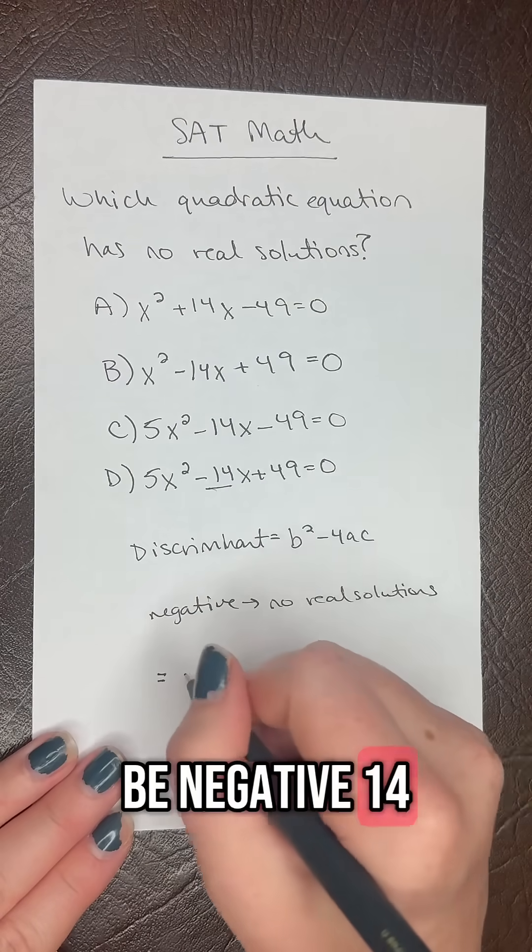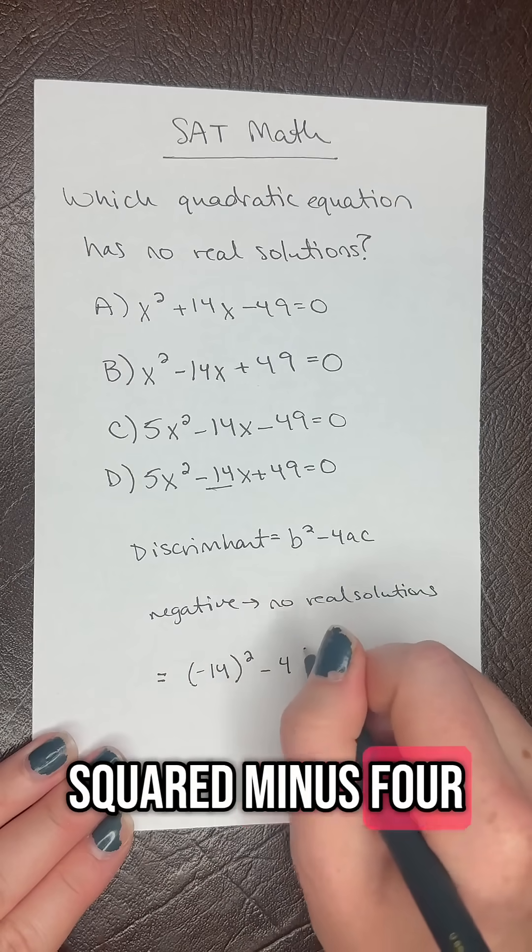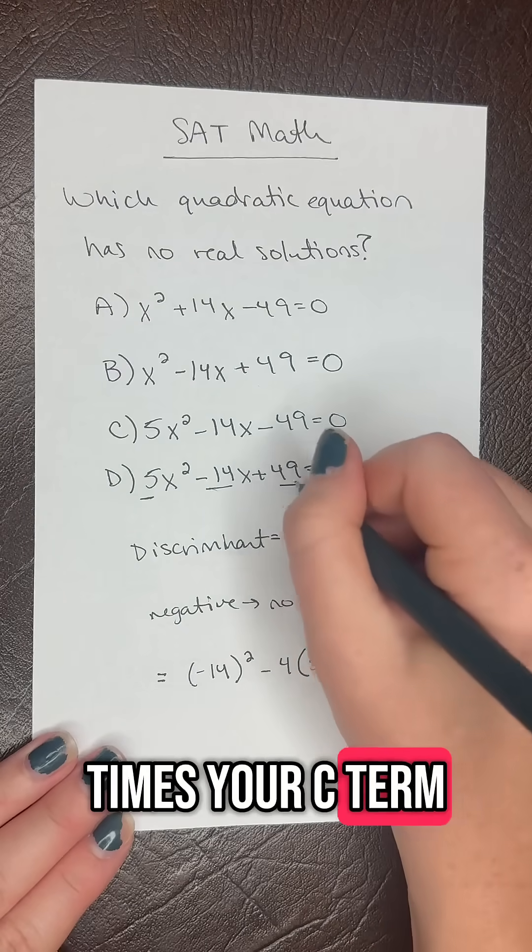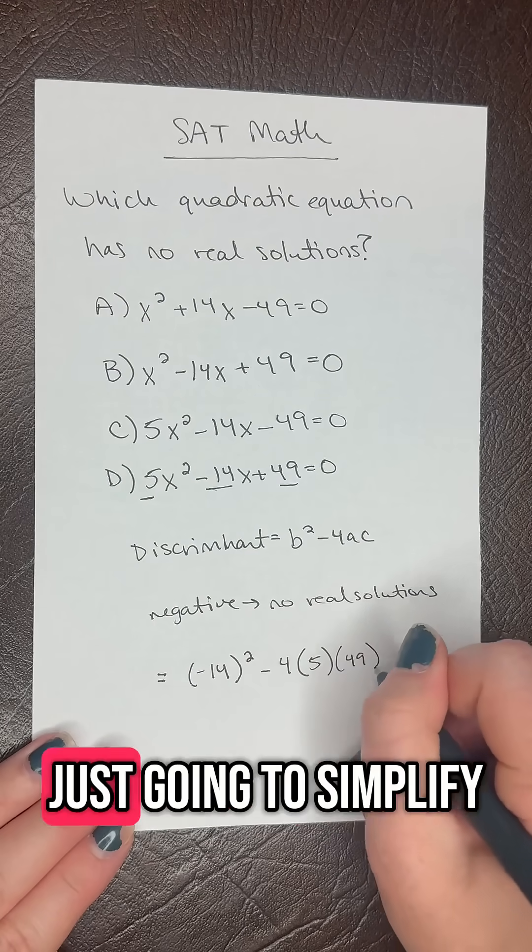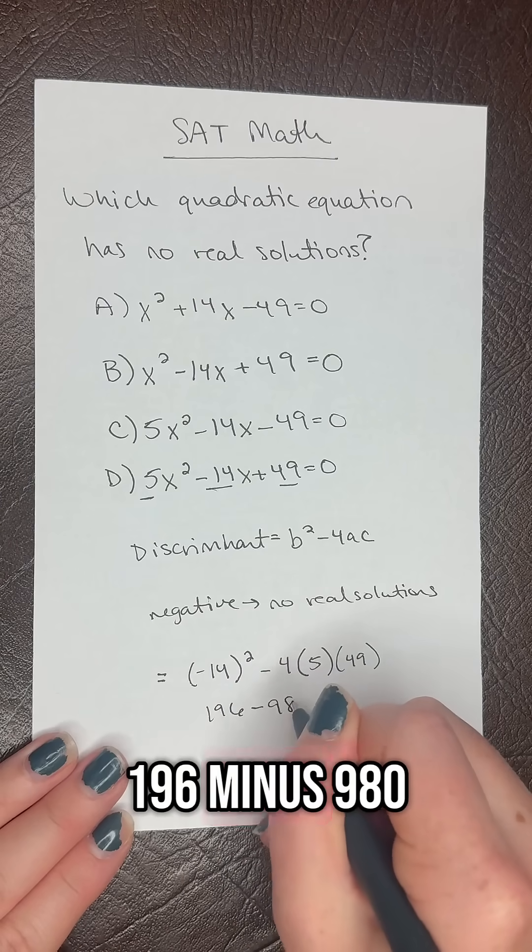times your c term, which is 49. Then you simplify: 196 minus 980